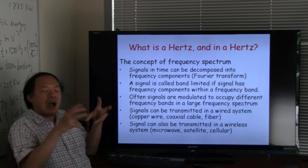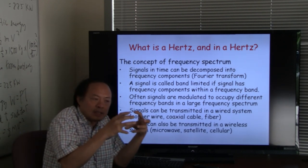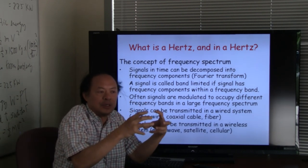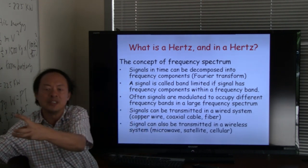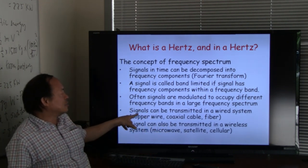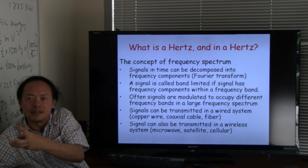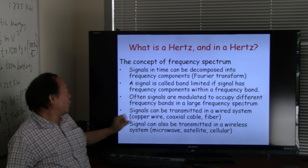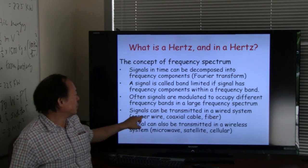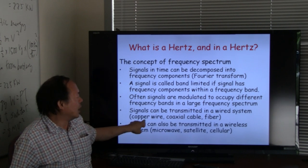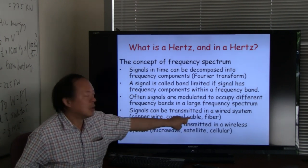Now after you do the modulation, which is basically moving the signal from one frequency band into another frequency band, you can transmit this modulated signal in a wired system through the use of a copper wire, a coaxial cable, or fiber.